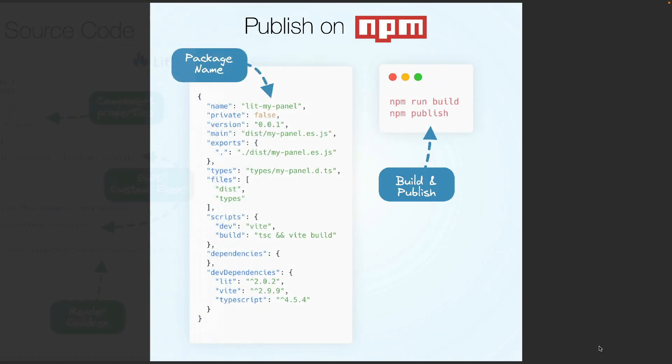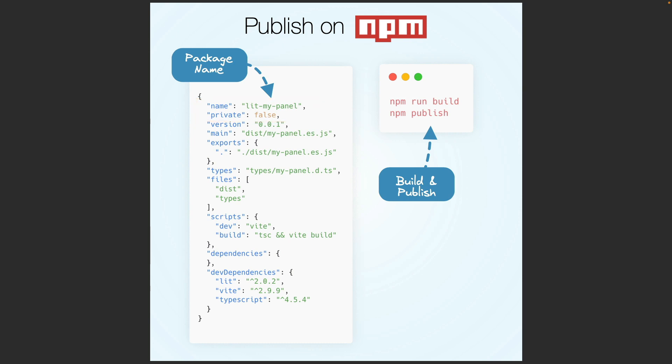In order to publish the package on NPM, your package.json should not be private and we need to assign the name of the package we want to publish. We can then run the build and publish it on NPM simply using npm publish.